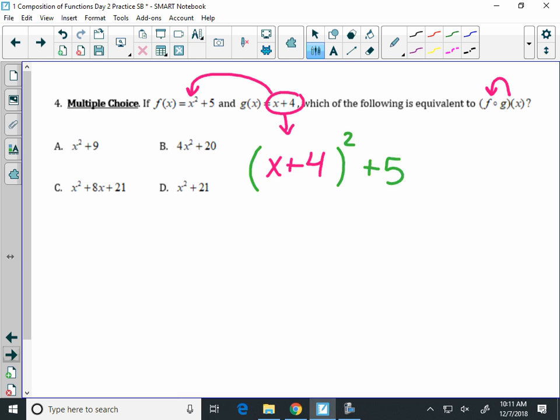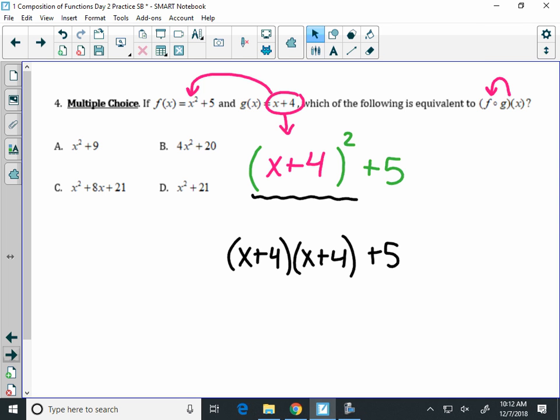Now remember, on our notes, we said this one's a little bit challenging. Because when I have a quantity squared like this, you need to start by writing out the expression as x plus 4 times x plus 4. That's what it means to be squared. Multiply by itself. Well, to simplify this, you now need to use the distributive property,